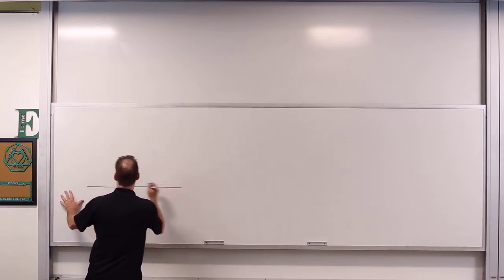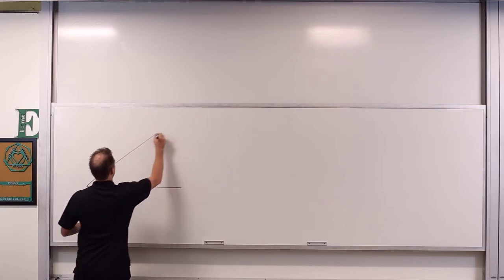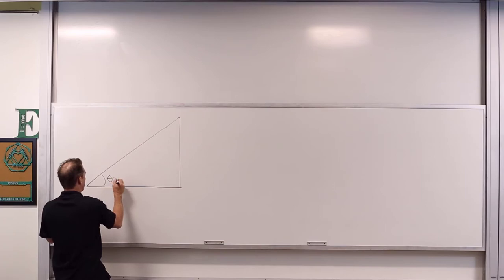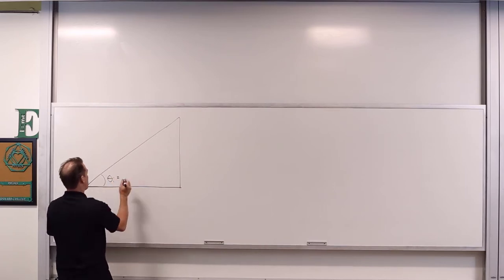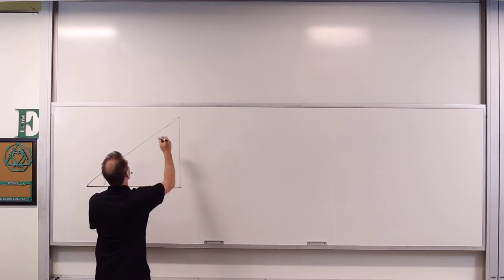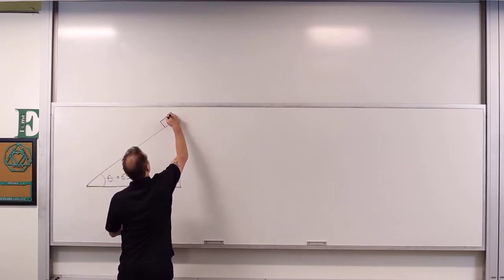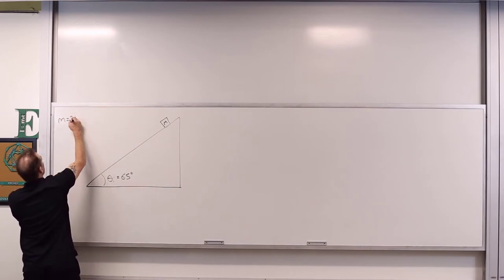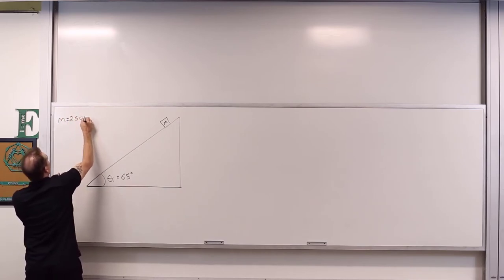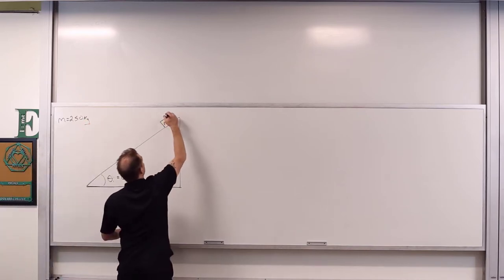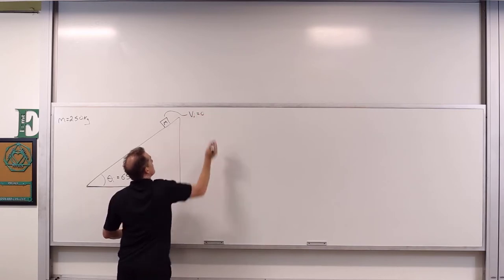We can draw out a picture. Theta incline is 65 degrees. We'll put a mass up here. Our mass has a mass of 2.50 kilograms, and its initial velocity is zero. It's released from rest at t equals zero.